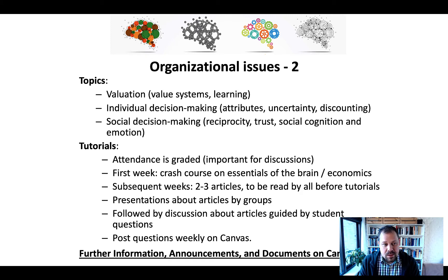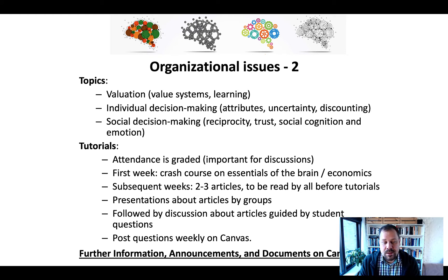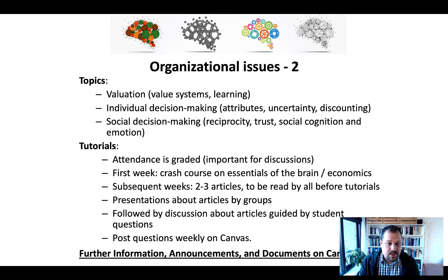We'll talk about individual decision making — models that allow us to explain how the brain may be involved in integrating attributes about different choice options, integrating uncertainty, or how temporal discounting comes about. There are also interesting new developments extending this to the social domain, involving social discounting, which reflects how distant someone is from you and how much you would trust this person, following a similar trajectory to temporal discounting. That brings me to social decision making — the last two lectures will be on reciprocity, trust, social cognition, and emotions and how these play into the types of decisions we make in economic games.